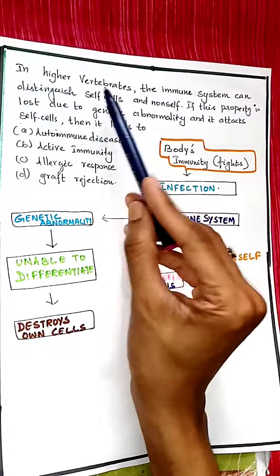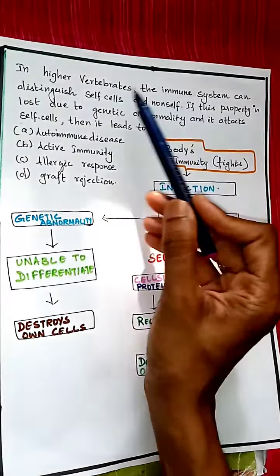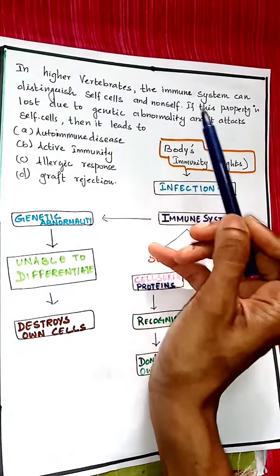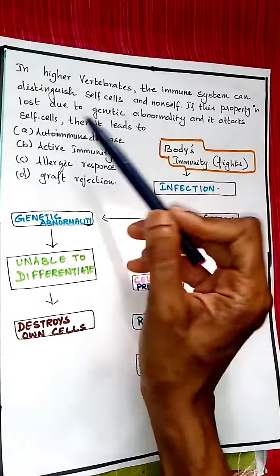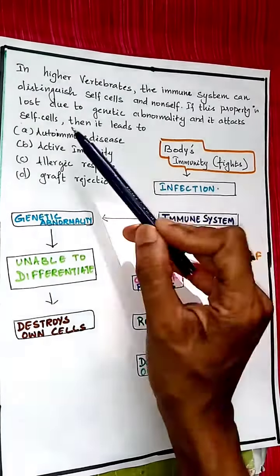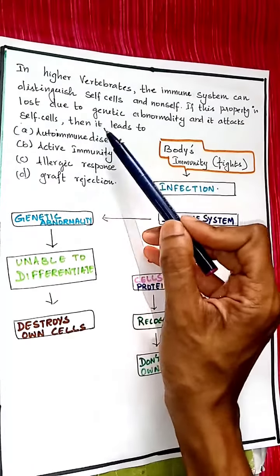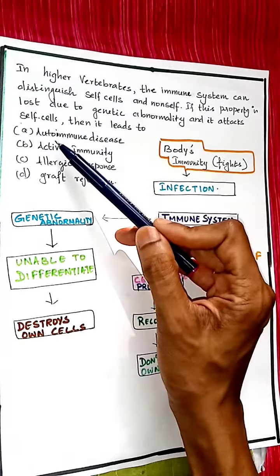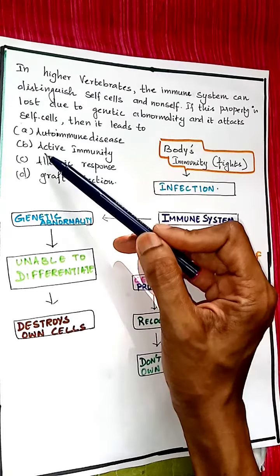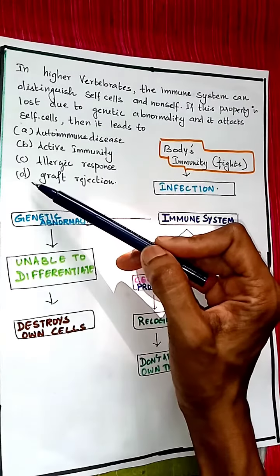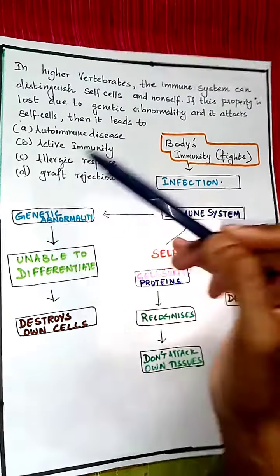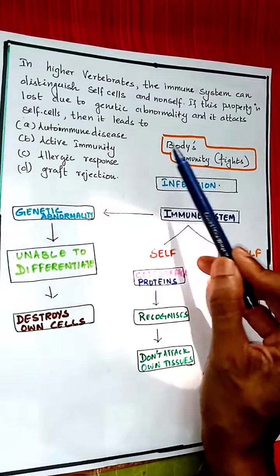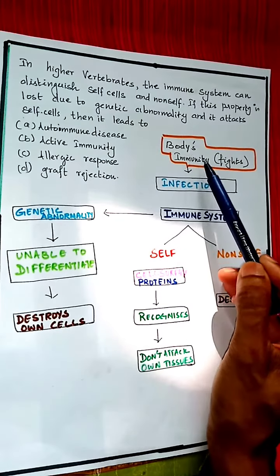The question is: in higher vertebrates, the immune system can distinguish self cells and non-self. If this property is lost due to genetic abnormality and it attacks self cells, then it leads to — first choice: autoimmune disease; second: active immunity; third: allergic response; fourth: graft rejection. We'll go for the explanation before choosing the answer.